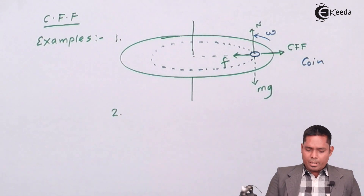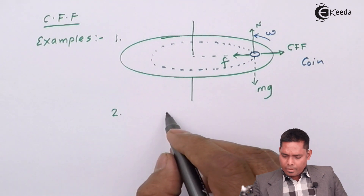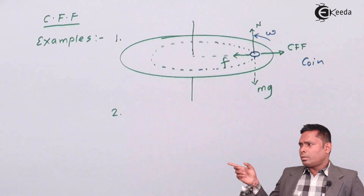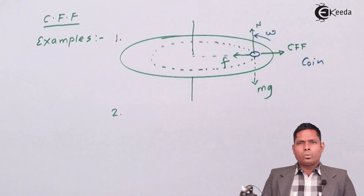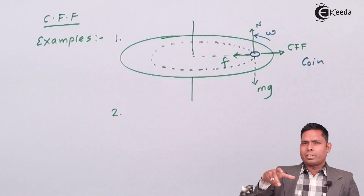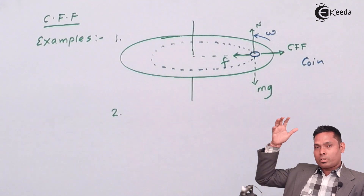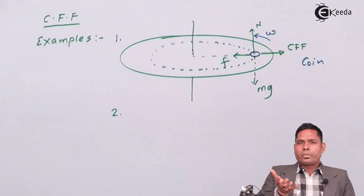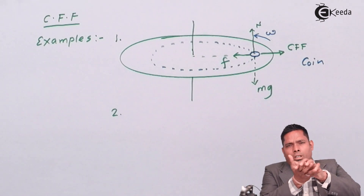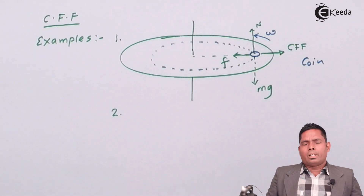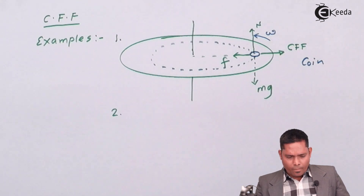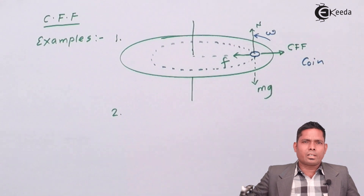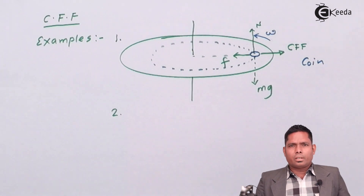Another example: if we have a bucket containing water and we rotate the bucket in a vertical circle, then if the speed is at or above a certain critical speed, the water will not spill down — because centrifugal force acts in the radially outward direction, pushing the water outward and not allowing it to fall down. Similarly, when you are in a vehicle taking a turn, you feel pushed radially outward — that is centrifugal force.